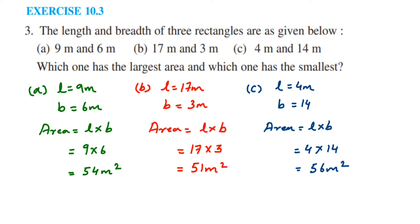Now we have to check which one has the largest area and which one has the smallest area. If you see the third problem, we have 56 meter square which is largest among all the three. So question C, or the third one, has the largest area. This is the largest one.